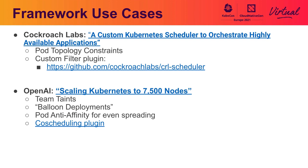For the scheduler framework, there are two interesting real-world use cases. The first is from Cockroach Labs, discussing how they created a custom filter plugin and used it to scale CockroachDB up and down. One interesting point is that they considered using pod topology spread constraints — which, if you're on Kubernetes 1.18 or later, is enabled by default and is one of the most helpful plugins for evenly distributing pods among nodes.